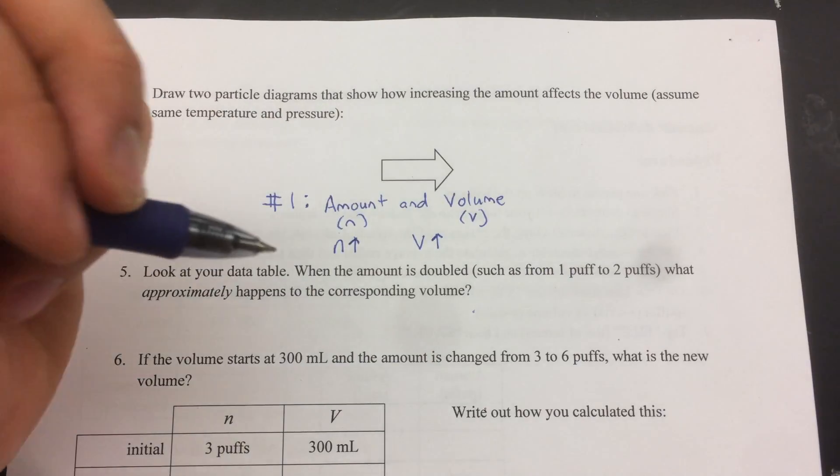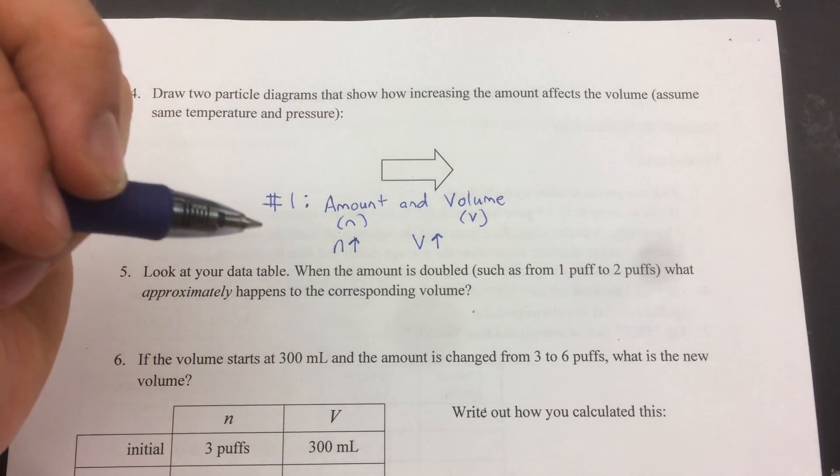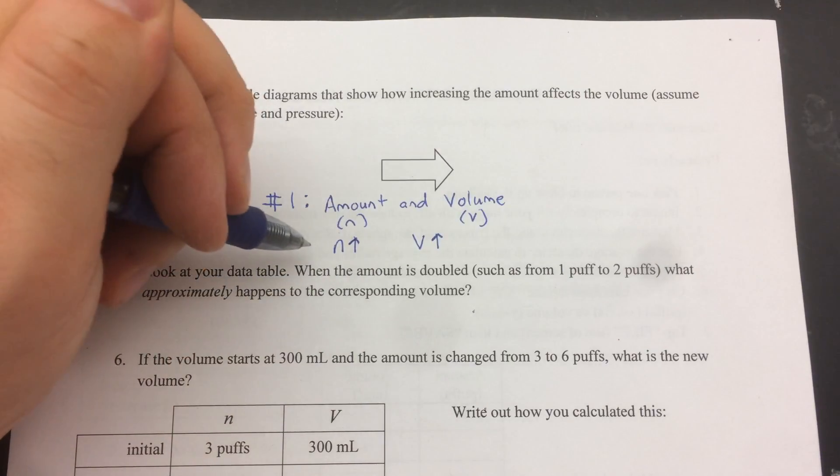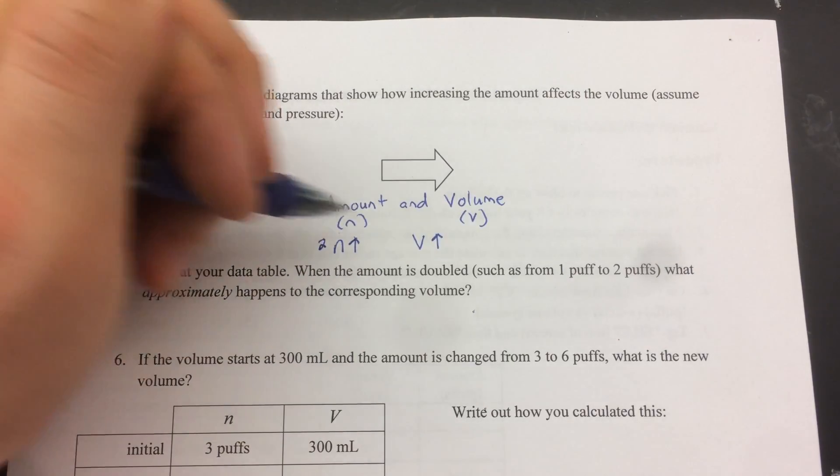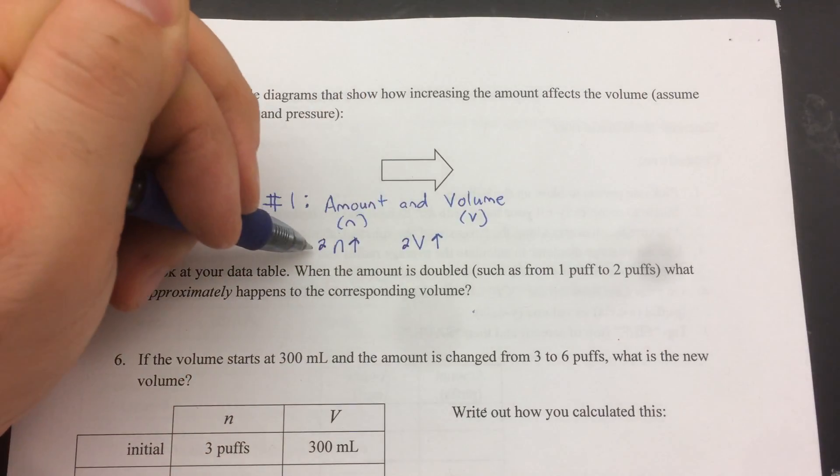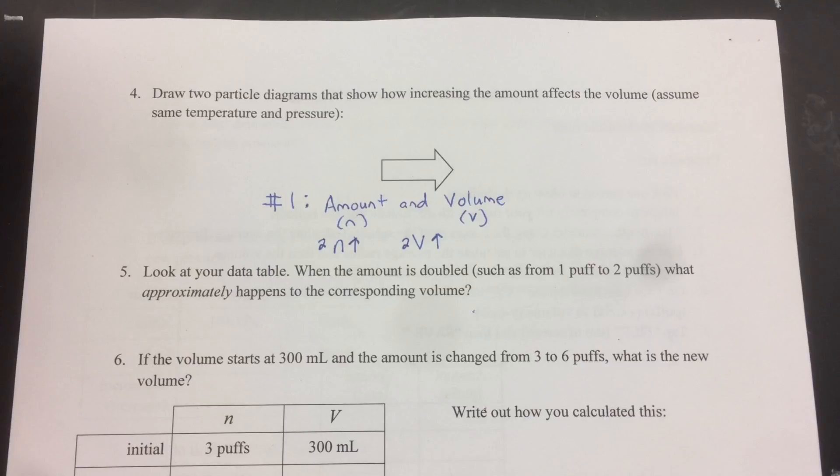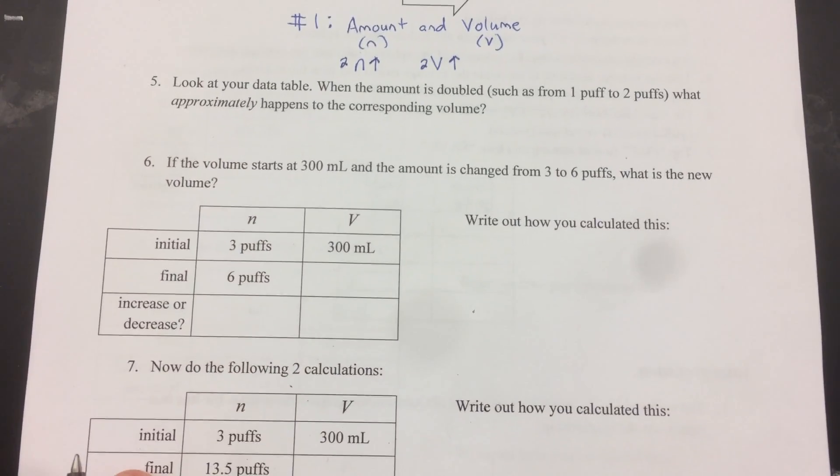And the nature of a direct relationship is they increase or decrease by the same factor. So that means that if this doubles, this doubles. If this gets cut in half, this gets cut in half. That's how a direct relationship works. So there's a couple of calculations here to do.